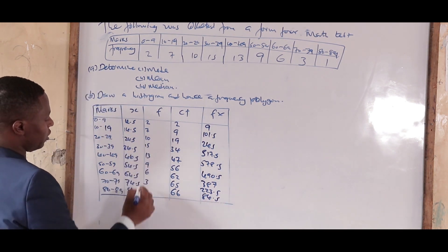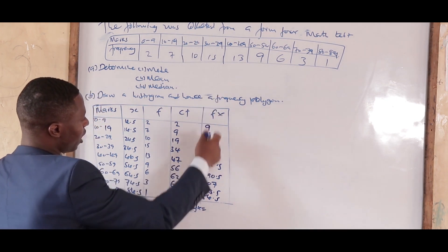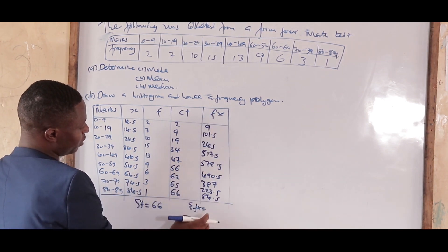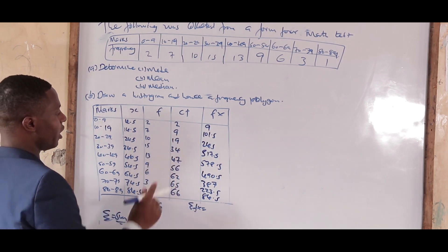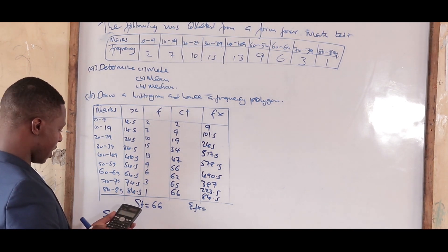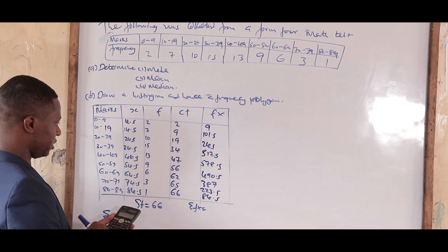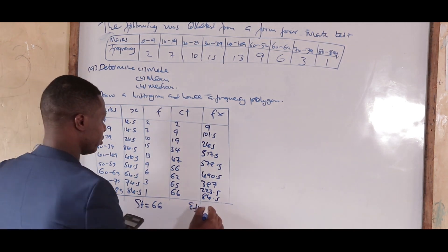Add all the frequencies to get sigma f = 66. Then add all the fx values to get sigma fx. Summing 9 + 101.5 + 245 + 517.5 + 801 + 490.5 + 387 + 223.5 + 84.5 gives sigma fx = 2,859.